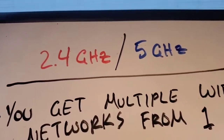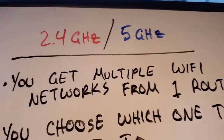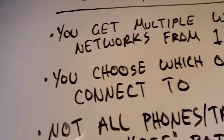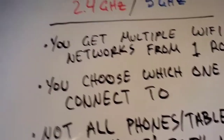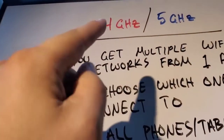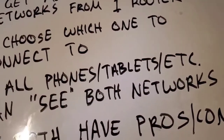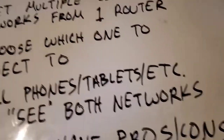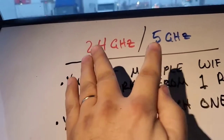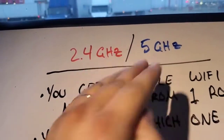As a general overview: with a dual-band router you get multiple Wi-Fi networks from one router — one network on each band. You choose which one to connect to from the list on your device. Not all phones, tablets, or other Wi-Fi devices can see both networks; most new devices are dual-band, like the latest iPhone or latest Android, and should be able to see both.